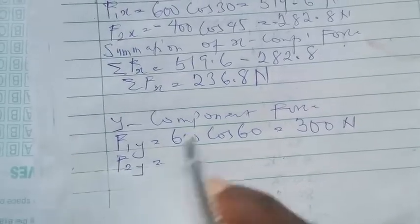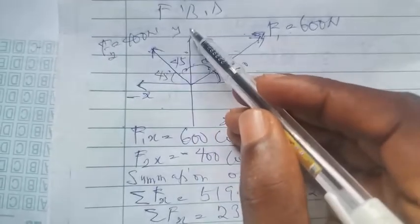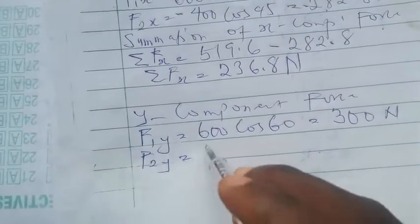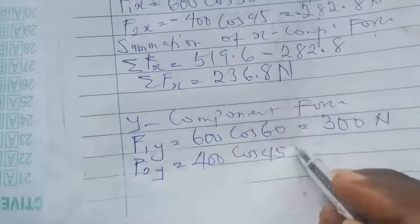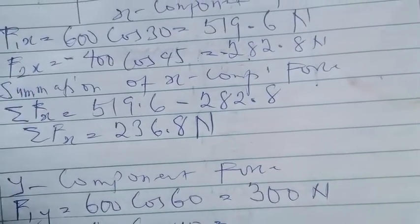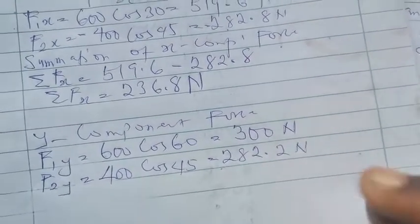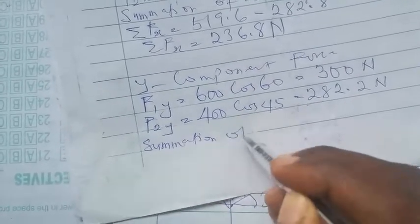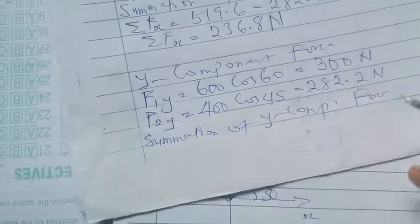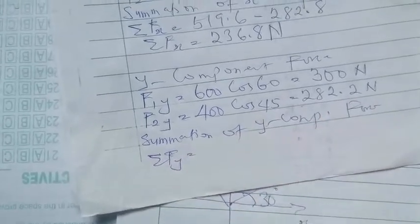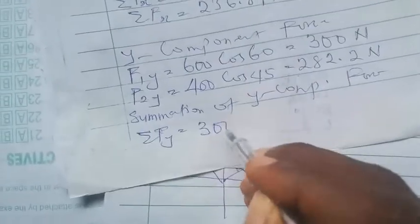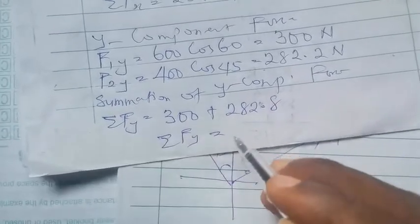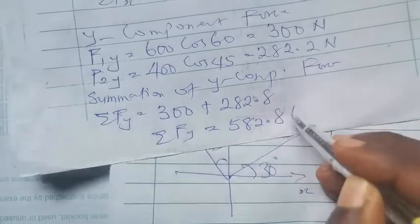So we'll resolve F2Y. Hold the tip of the arrow, pull it to the means the vertical line, watch the direction. It points upwards, so it's positive. And it also passes through 45 degrees, so you have 400 cos 45, and this is equal to 282.8. So after this we will now take summation of vertical force, summation of Y component force. That gives us 300 plus 282.8, and summation F of Y will give us 582.8 Newtons.